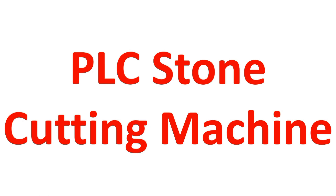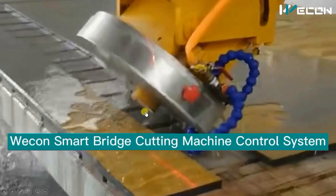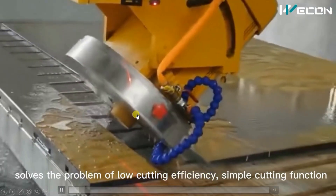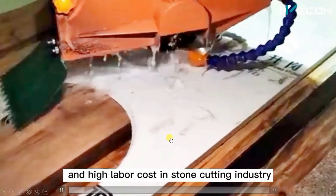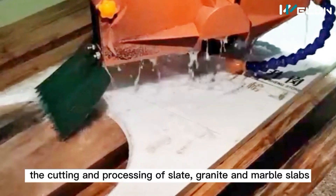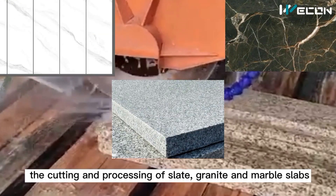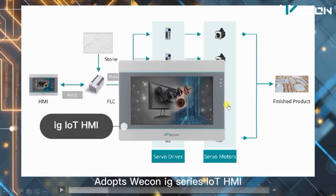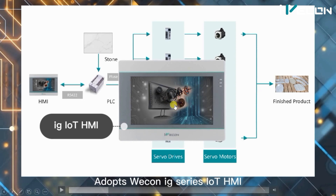Hello friends, welcome to our channel instrumenttools.com. In this series of real-life PLC and HMI examples, today we are going to see a PLC stone cutting machine. This is a smart stone cutting machine which cuts very precisely. It works fully automatically and can work on slate, granite, and marble slabs. This machine consists of an IoT-enabled HMI, so we can work on Internet of Things through this HMI also.